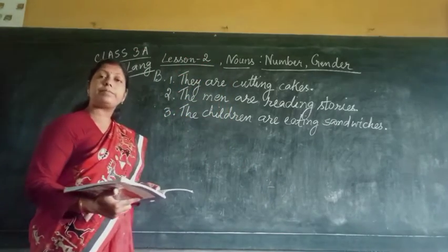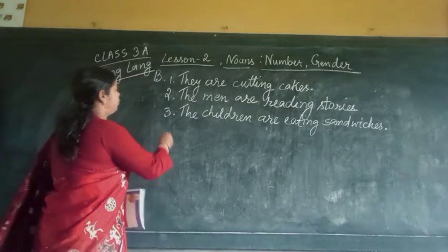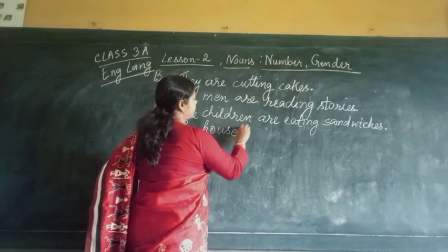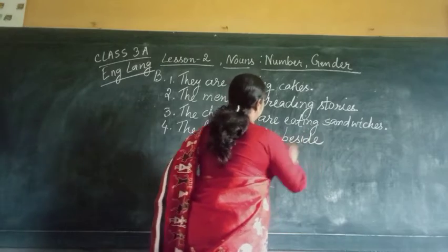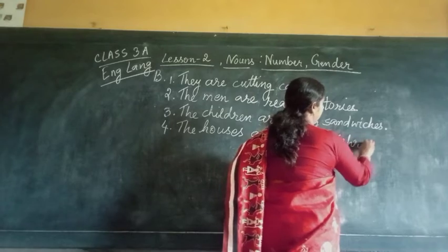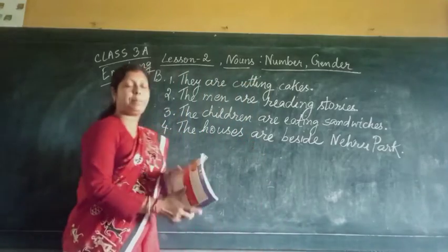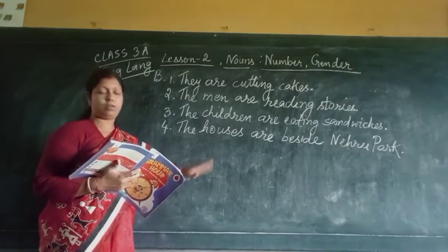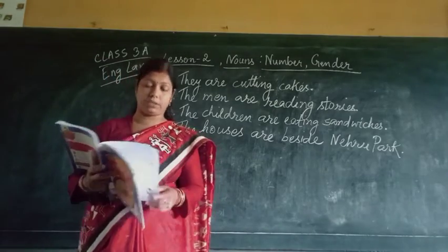Number 4: The house is beside Nehru Park. We are going to change it to: The houses are beside Nehru Park. We are not changing 'Nehru Park' because it is the name of a particular place. 'Houses' is a regular plural. Keep in mind which is irregular and which is regular.